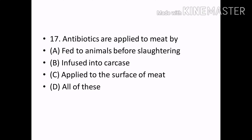Antibiotics are applied to meat by: Feed the animals before slaughtering, infused into the carcass, applied to the surface of the meat, all of these. Correct answer: Option D — All of these.